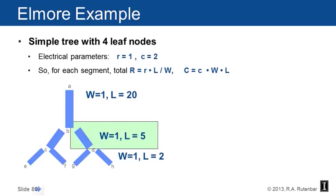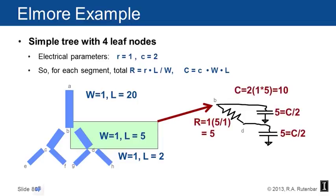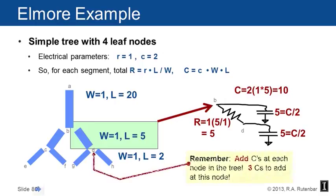If we just take one of those segments, let's say the width equals one, length equals five segment from node B to node D, the first thing you do is calculate the resistance and the capacitance. You build the R and the two C's of the pi model. If you run the formulas, you'll find that the resistance is five, the capacitance is ten. We put half the capacitance at each node. So there's a five at B and a five at D. Remember that every wire segment creates a capacitor on each end.